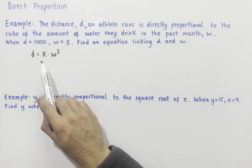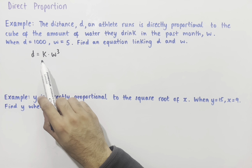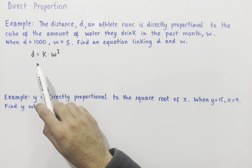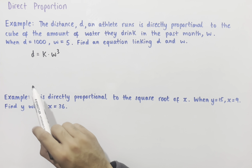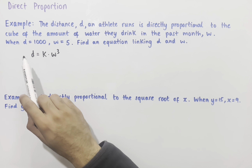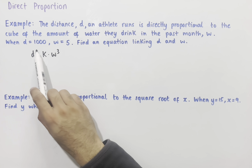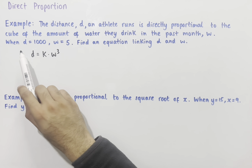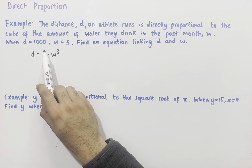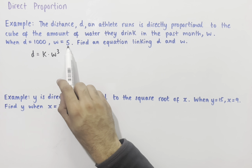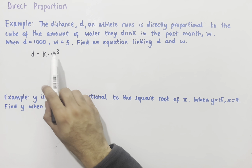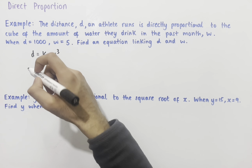This multiple k is called the constant of proportionality. We're now going to work out what k is by using the information in the question. We're told that when d equals 1000, w equals 5, so we can substitute this into the equation.